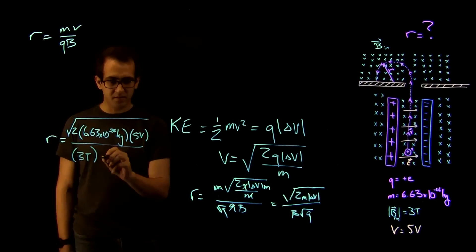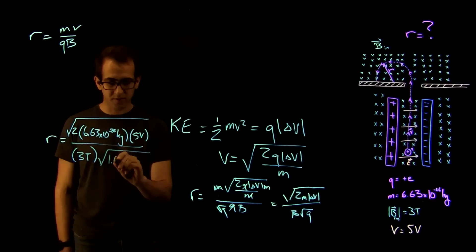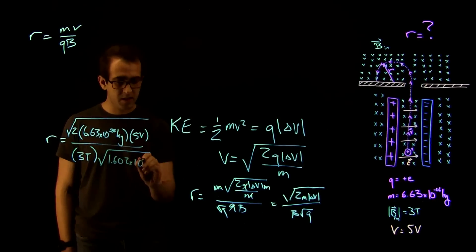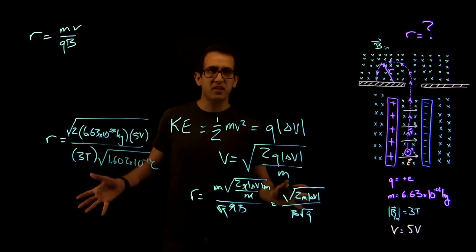And the square root of Q, where Q is just E. So that's 1.602 times 10 to negative 19 coulombs. We put that into our calculator.